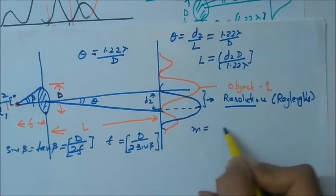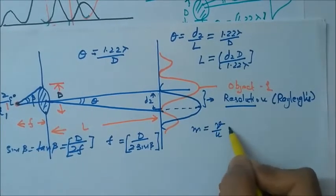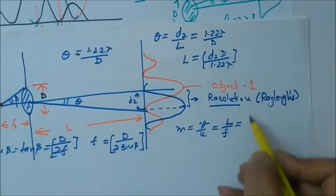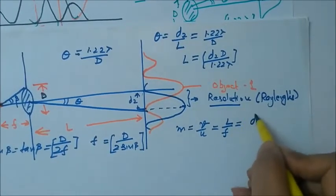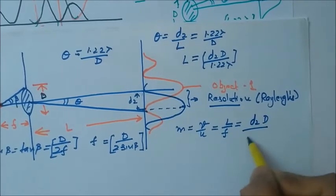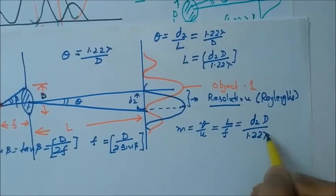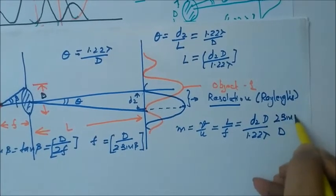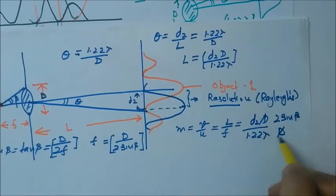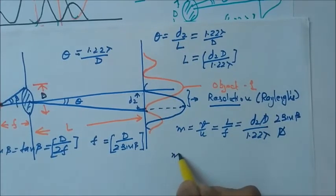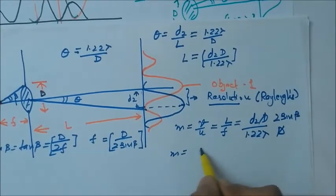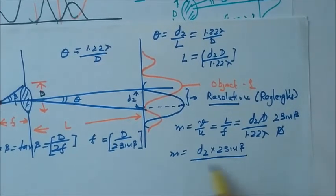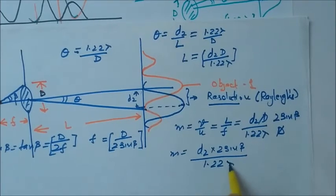Now what is the magnification? Magnification is V upon U, where V is L and U is F. We place the value of L and F here: L is D2 times D upon 1.22 lambda, and F is D upon twice sin beta. D gets cancelled, so we get magnification equal to D2 times twice sin beta upon 1.22 lambda.